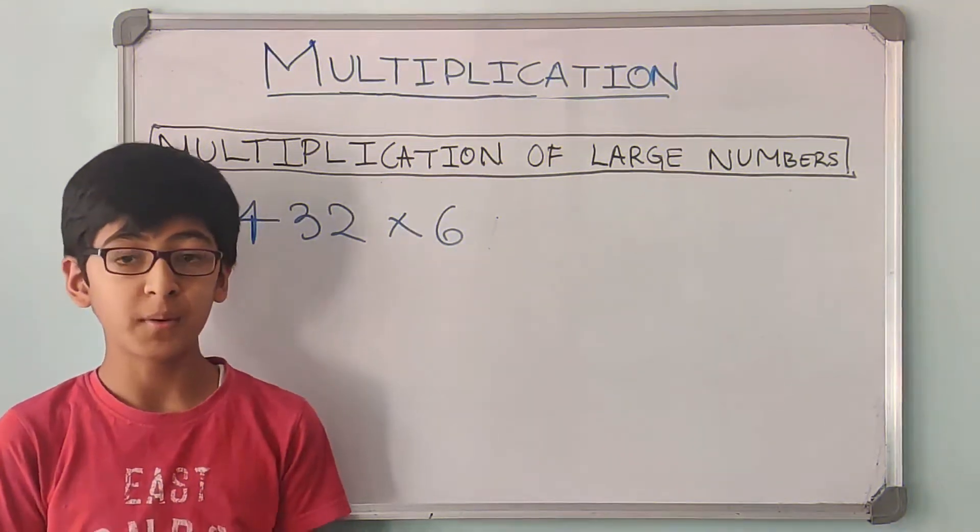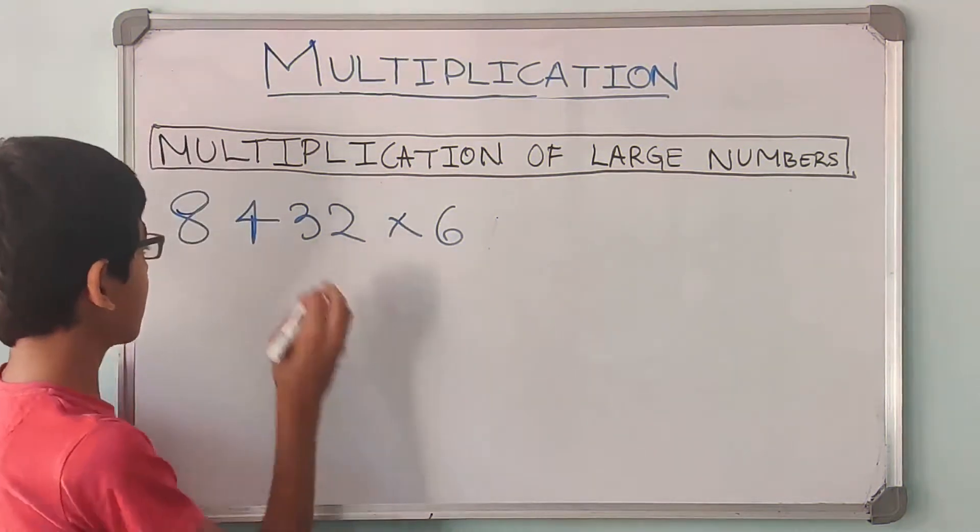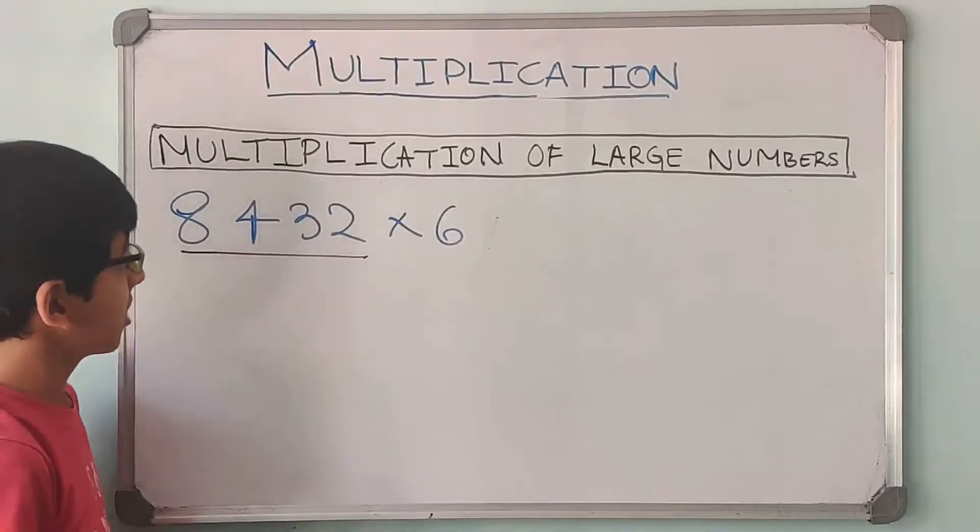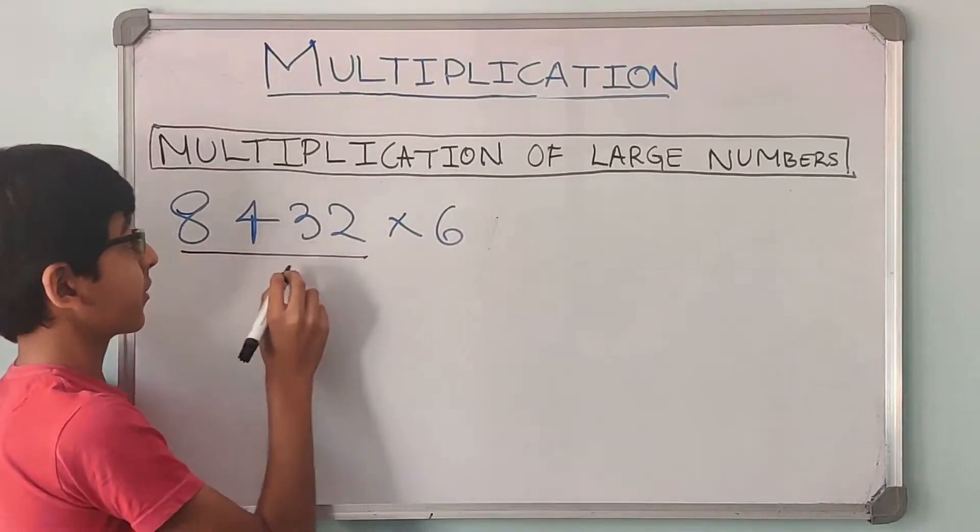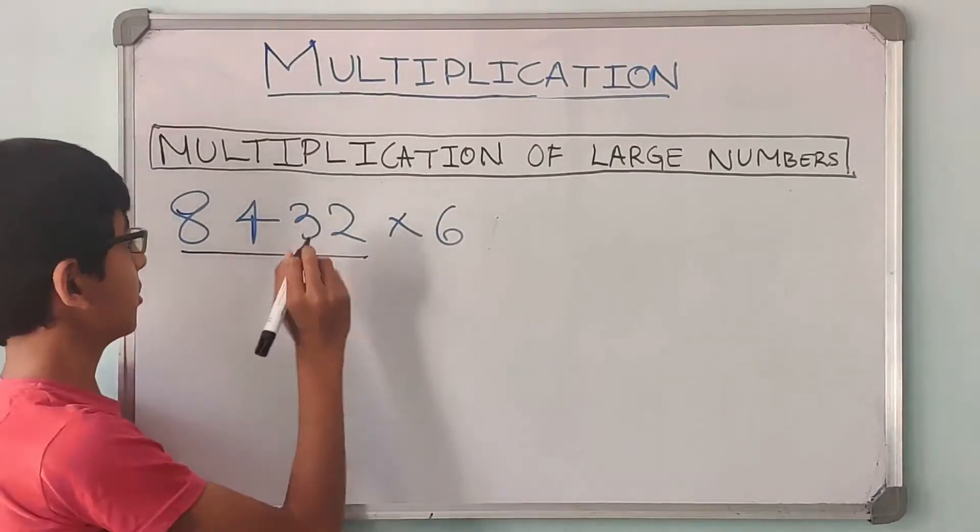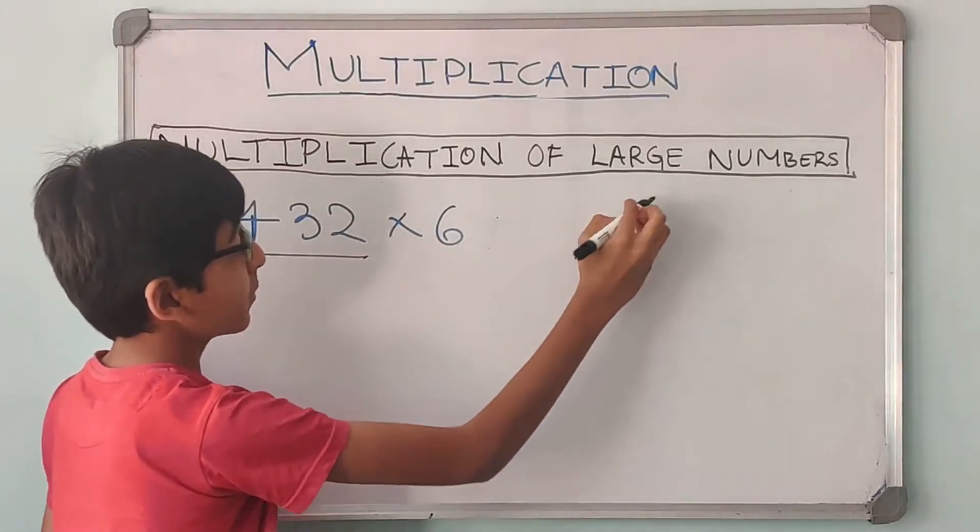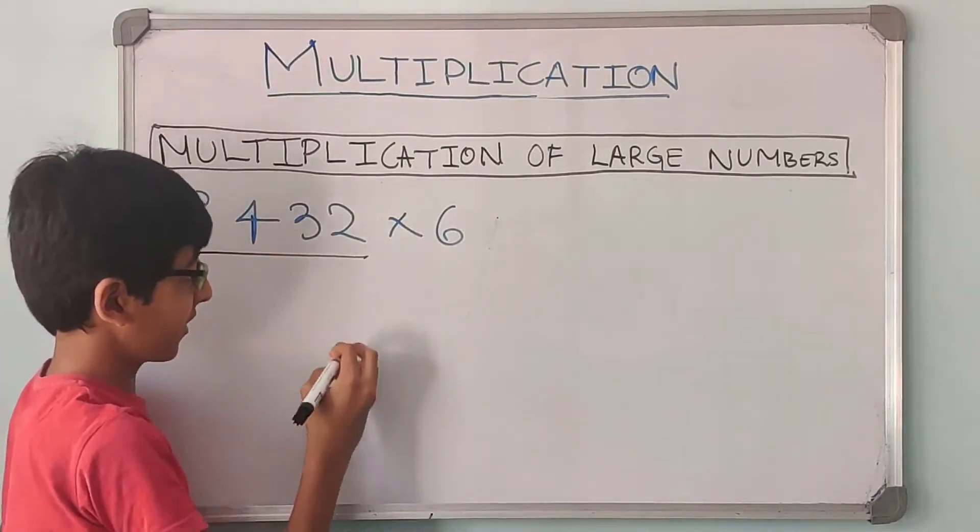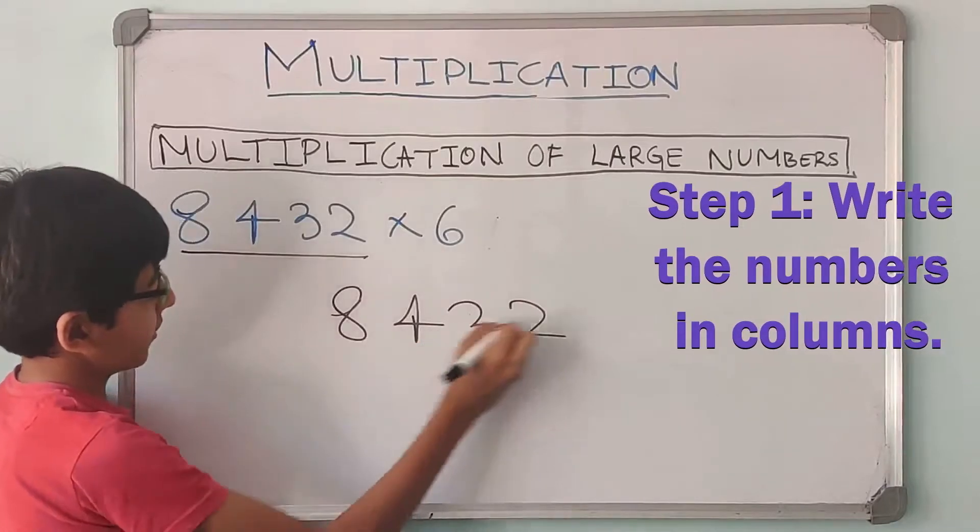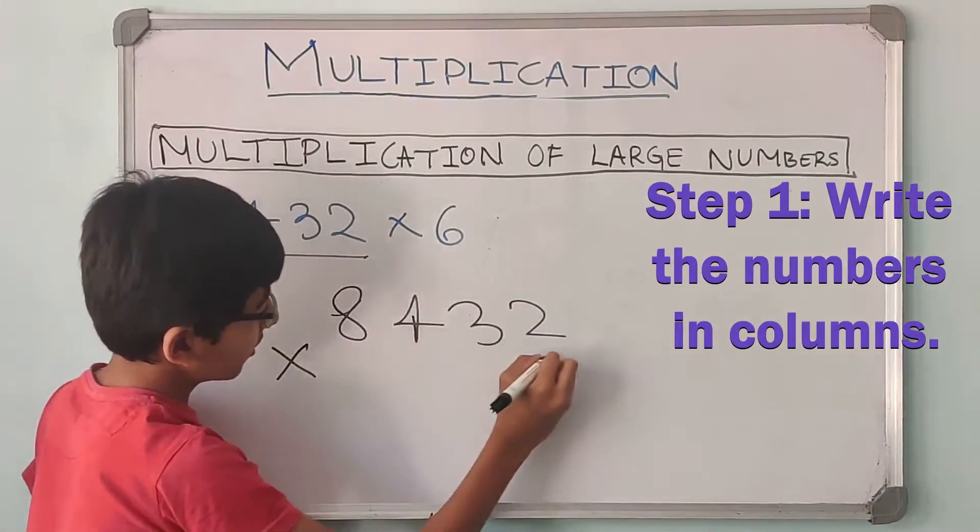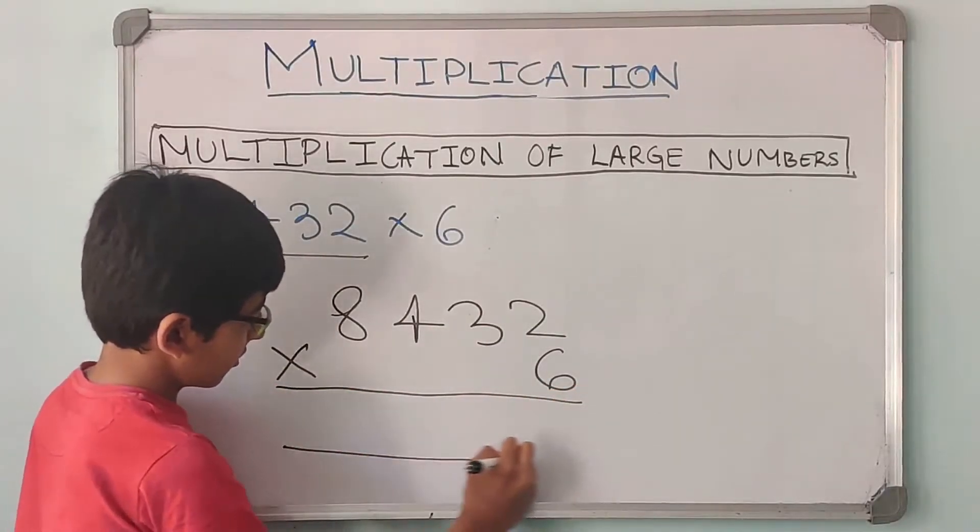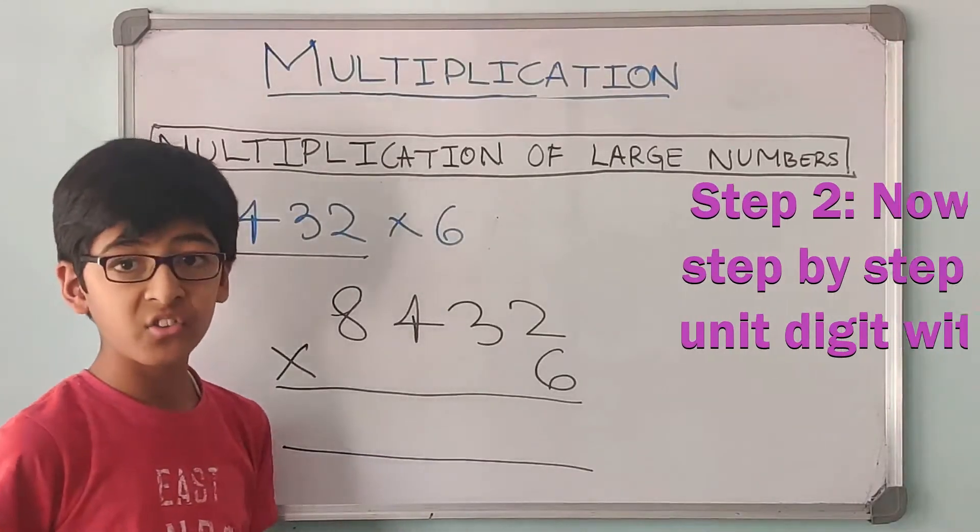We already know the basic multiplication tables. But now if someone asks you 8,432 into 6, how will you solve this? Are we going to learn the multiplication table of 8,432 now? No. So now let us learn how do we do the multiplication of large numbers like these. So first step is to write them in columns: 8,432. Put the into sign over here, and then 6 below the ones digit.